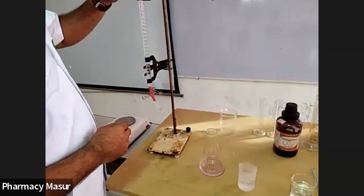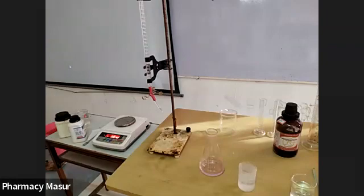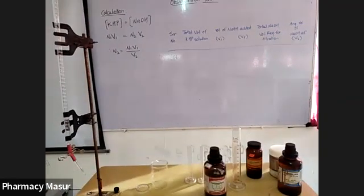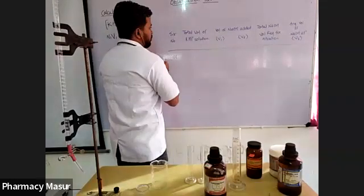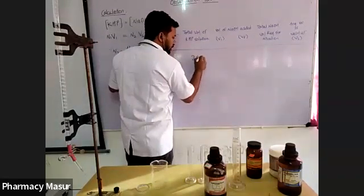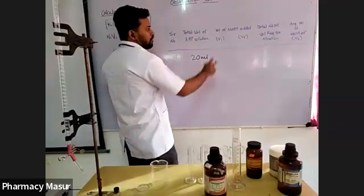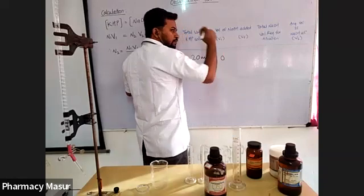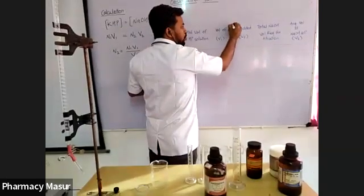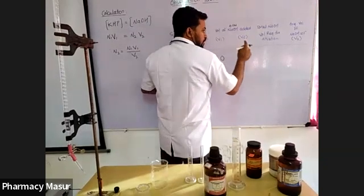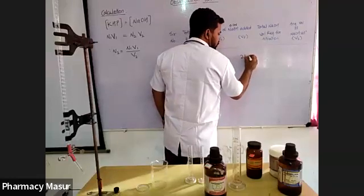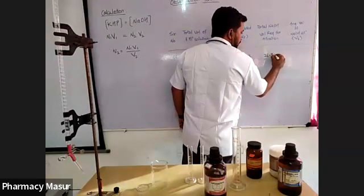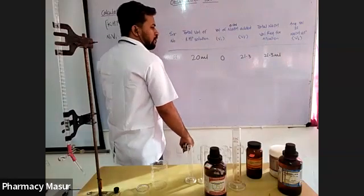You can see the burette reading is approximately 21.3 ml. So after addition of 21 ml of NaOH, we get the first titration value. The total volume of KHP solution added is 20 ml. The initial burette reading for 0.1 normal NaOH is 0, and after the endpoint, the reading is 21.3 ml.